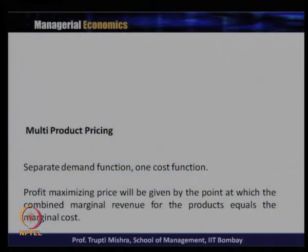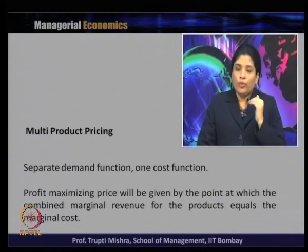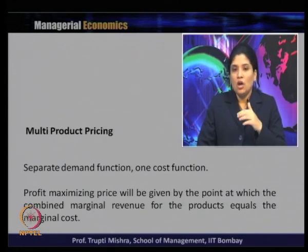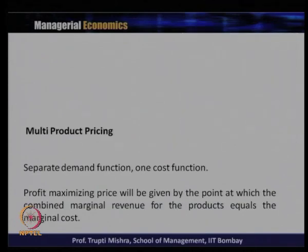In this case, we get separated demand functions but only one cost function. So the profit-maximizing price will be given by the point at which the combined marginal revenue for the products equals the marginal cost — or the marginal revenue of each product equals the combined marginal cost. We will take a graphical explanation to understand deriving the profit-maximizing price and output in multiproduct pricing.